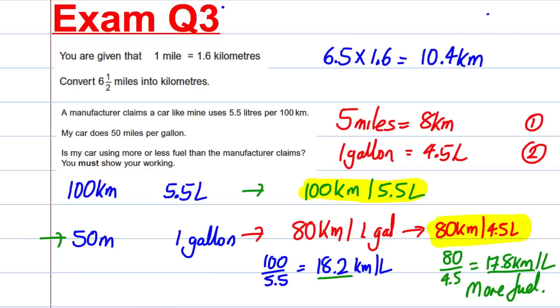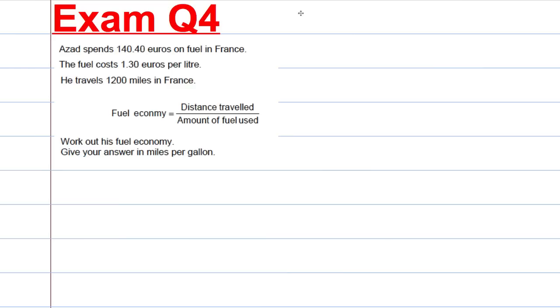Next question, question four. Azad spends 140 euros 40 cents on fuel in France. Fuel costs 1 euro 30 cents per litre. He travels 1200 miles in France. Work out his fuel economy.